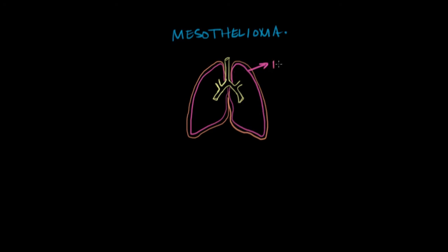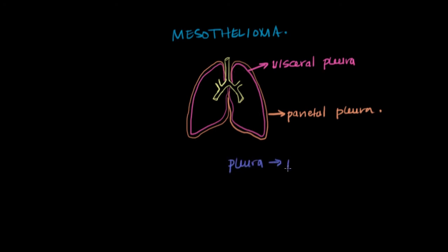Let's explore the linings of the lung. In pink, you see the visceral pleura — the lining of the lung that is directly adjacent to the lung, closest to it. In orange is the parietal pleura, which is the lining adjacent to the chest wall, further away from the lung. The pleura, or lining of the lung, is made up of cells called mesothelial cells. Mesothelial cells have an important function: they secrete fluid that comes between these two layers of the pleura, reducing the friction between them.